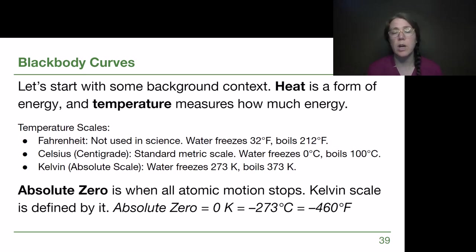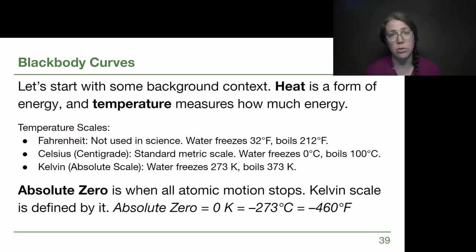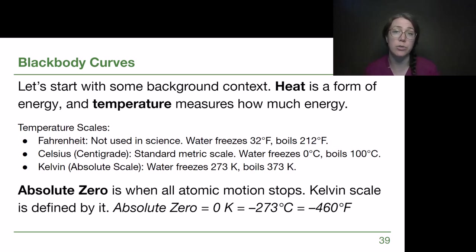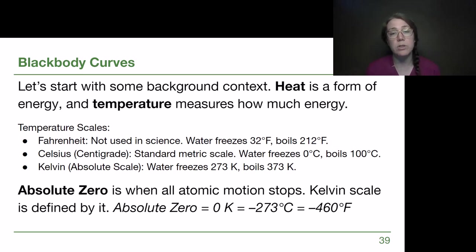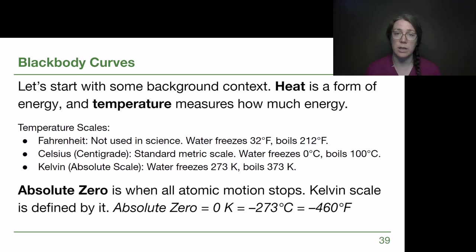When we talk about temperature scales, we are used to in our everyday lives using Fahrenheit. It's not used in science, but I want to give us that context. Water freezes at 32 degrees Fahrenheit — we know in winter in Michigan it can get colder than that. Water boils at 212 degrees Fahrenheit, so if we're making tea and there's steam coming off, that is water that has boiled and turned to steam.